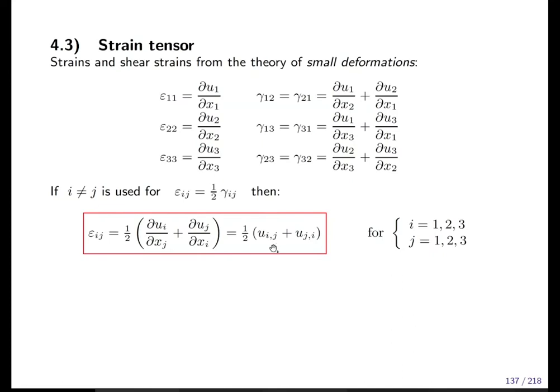Now in shorter notation, shorter index notation, the partial derivative is replaced by the comma. So u_i,j is the same as du_i/dx_j.